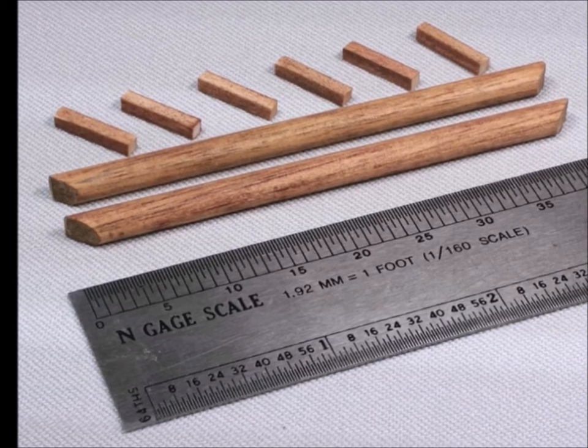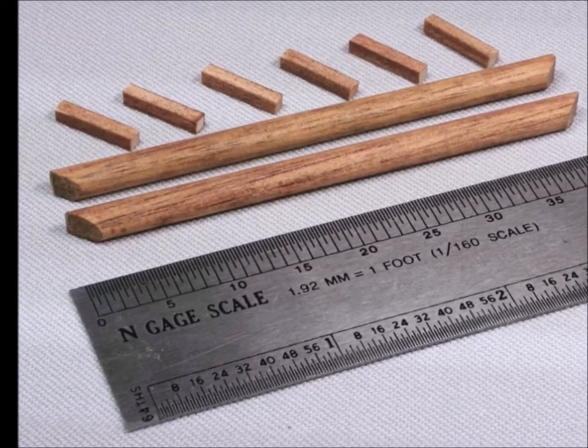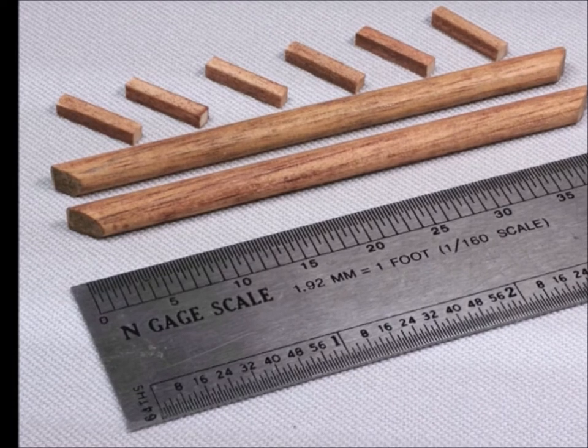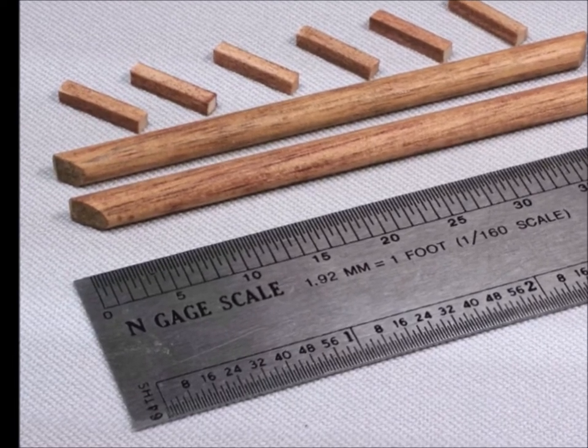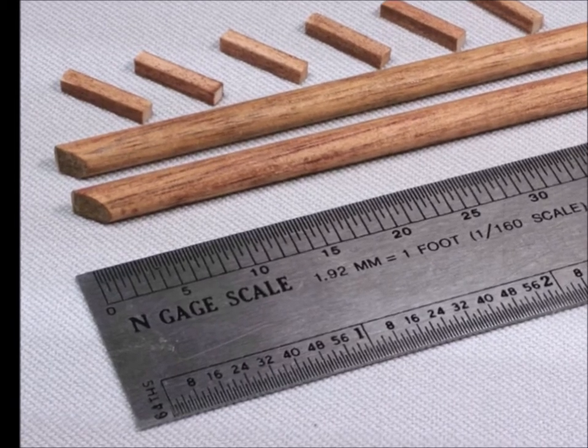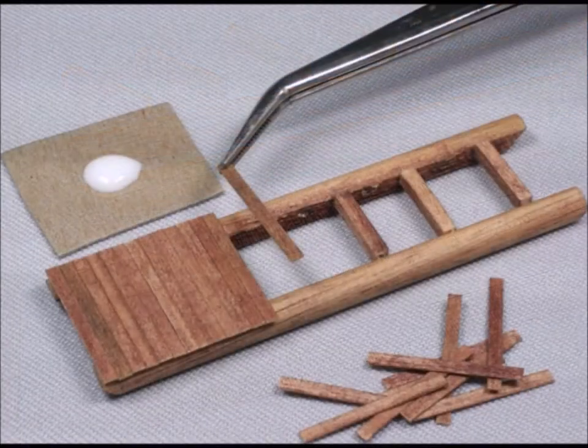As you start moving into more of these advanced kits, you might want to invest in one of these scale metal rulers. It tells you exactly how many feet in scale that you might want, and they come in all the different scales: Z, N, HO, O, the bigger ones.